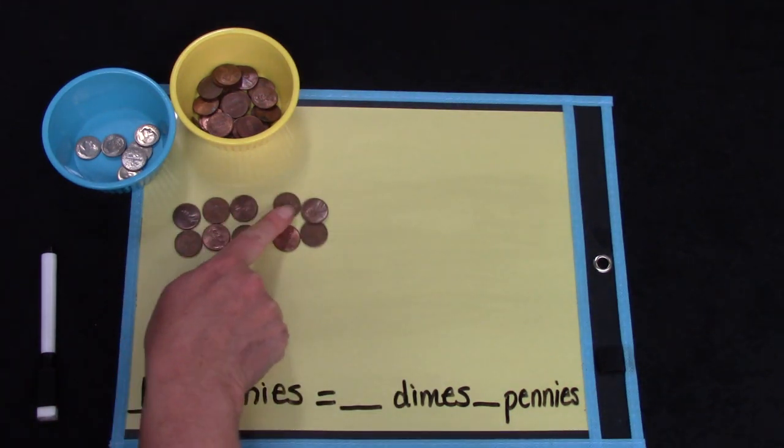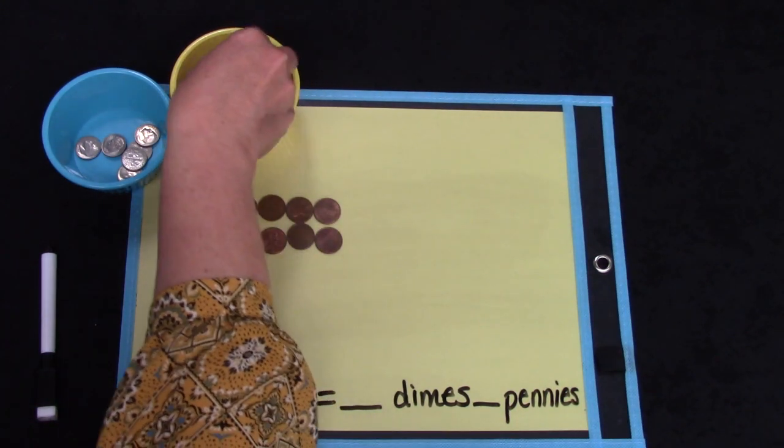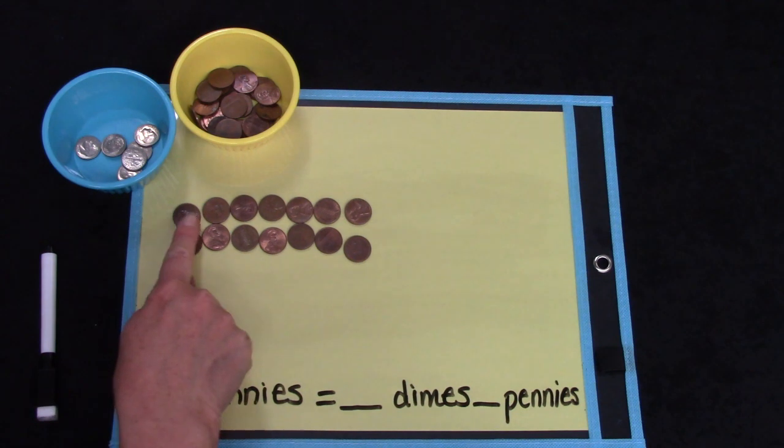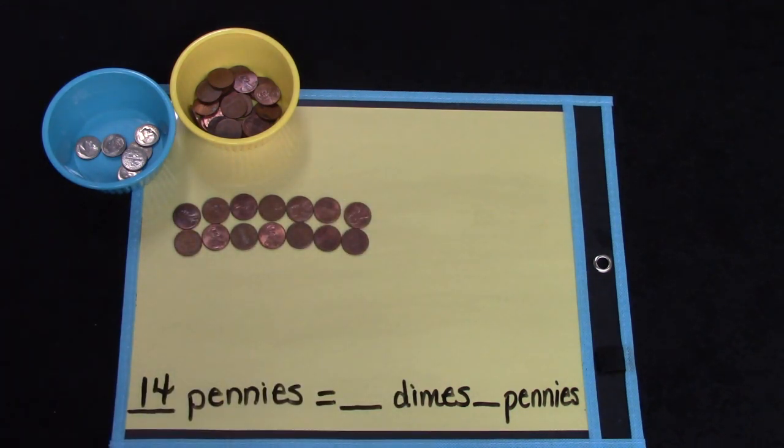2, 4, 6, 8, 10, 11, 12, and then 14. 2, 4, 6, 8, 10, 12, 14. I have 14 pennies.